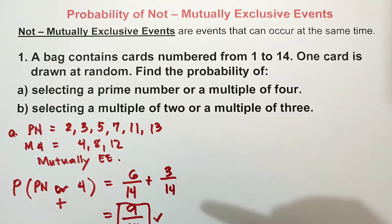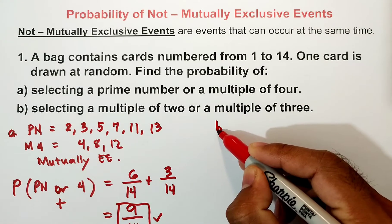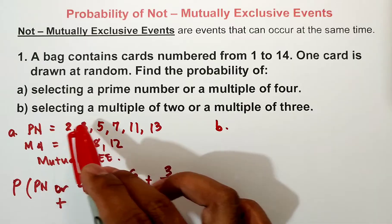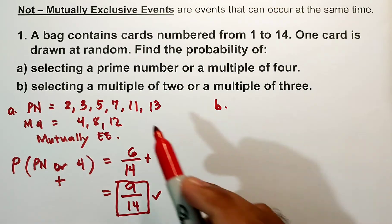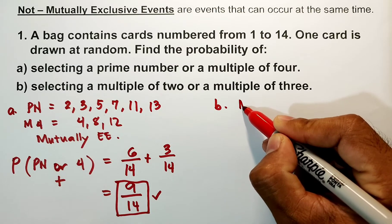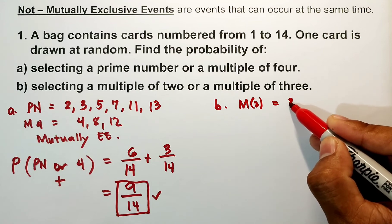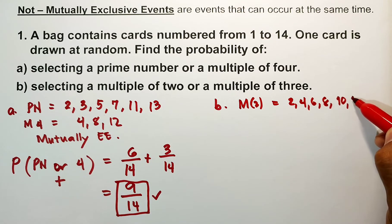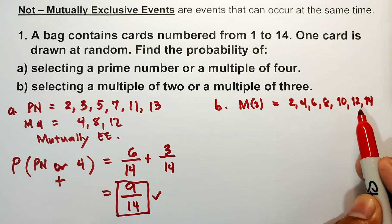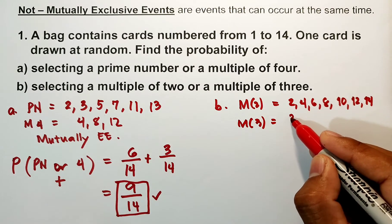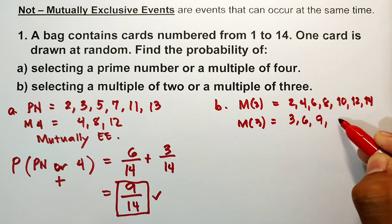Now for letter B, selecting a multiple of 2 or a multiple of 3. Multiples of 2 from 1 to 14: 2, 4, 6, 8, 10, 12, 14 — that is 7 numbers. Multiples of 3: 3, 6, 9, 12 — that is 4 numbers. Do they have common numbers? Yes — the intersection is 6 and 12. Therefore this is not mutually exclusive events.